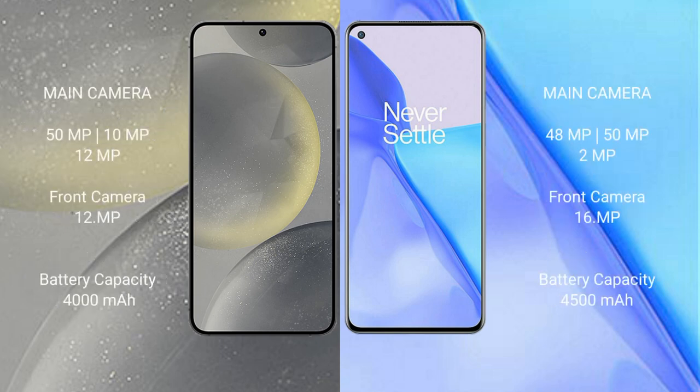Samsung Galaxy S24 features a rear triple camera setup of 50MP plus 12MP plus 10MP and a front camera of 12MP. OnePlus 9 features a rear triple camera setup of 48MP plus 50MP plus 2MP and a front camera of 16MP.